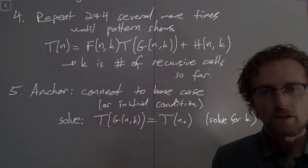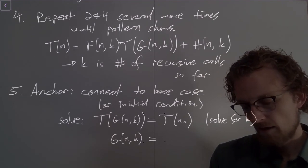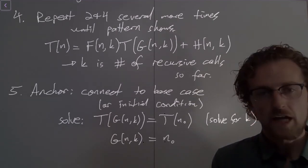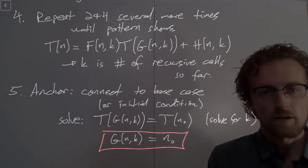Solve for k. Okay, and so literally what that means is g(n,k), solve that, set that equal to n0 and solve that. Right, so this ends up being the anchoring step.